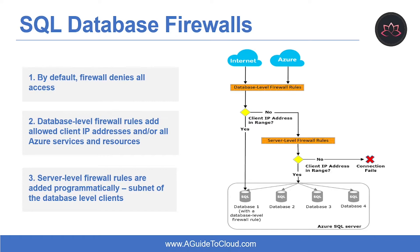When a computer attempts to connect to your database server from the internet, the firewall first checks the originating IP address of the request against the database level IP firewall rules for the database that the connection is requesting. To allow applications from Azure to connect to your Azure SQL database, Azure connections must be enabled. When an application from Azure attempts to connect to your database server, the firewall verifies that Azure connections are allowed. As a best practice, use database level IP firewall rules to enhance security and to make your database more portable. Use server level IP firewall rules for administrators and when you have several databases with the same access requirement and don't want to configure each database individually.